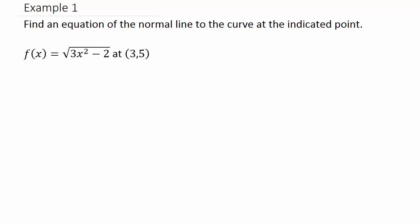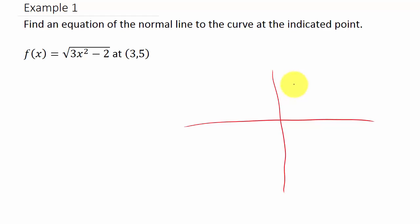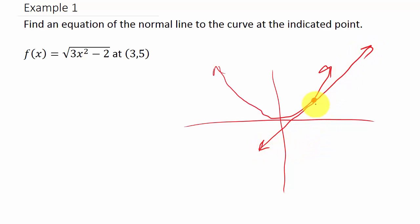In this video we're going to talk about finding the equation of the normal line to the curve at the indicated point. So what's the normal line? Let's just suppose that you have some kind of graph — say a parabola — and we have a point on the parabola. You can see that there is a line tangent to the curve at that point. The normal line is the line that is perpendicular to the tangent line.